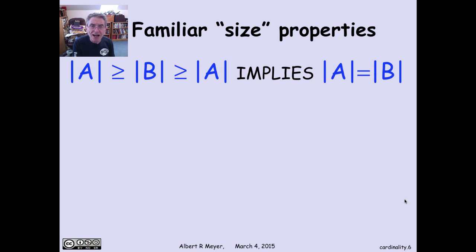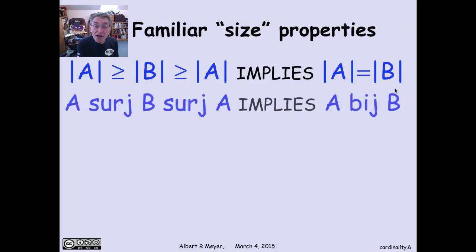Well, let's look at an example where the size properties hold, but they're less obvious. Because here's another familiar size property. If A and B are each of size greater than or equal to the other one, then they're the same size. So if the size of A is greater than or equal to the size of B, and the size of B is greater than or equal to the size of A, then A and B are the same size. Now, this is certainly true for finite sets. It's kind of, you don't even think about that fact. And it holds for infinite sets, but it's not so obvious.